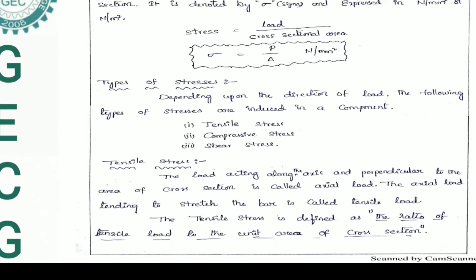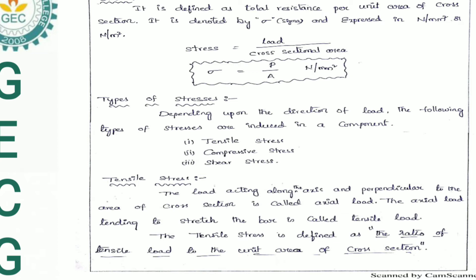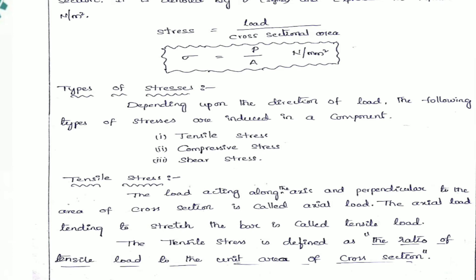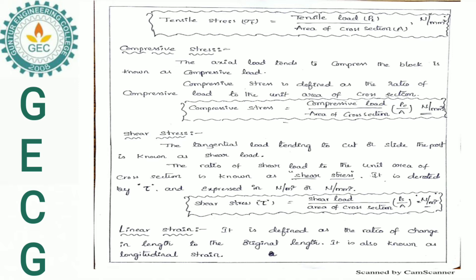What is Tensile Stress? The load acting along the axis and perpendicular to the area of cross section is called Axial Load. The axial load tending to stretch the bar is called Tensile Load. Tensile stress is defined as the ratio of tensile load to the unit of cross sectional area. Finally, tensile stress sigma_T = Pt / A Newton per mm².